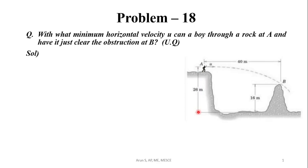Point A is at a height of 26 meters from the reference line. Point B is at a height of 16 meters from the reference line. Point A and point B are at a horizontal distance of 40 meters.